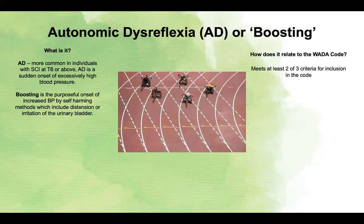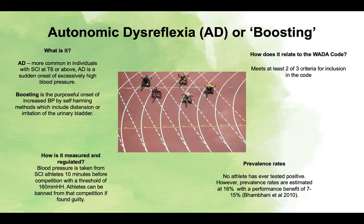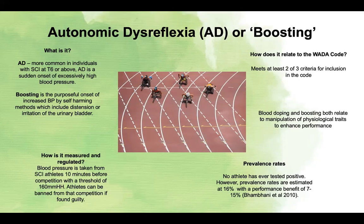The second para-specific cheating method is autonomic dysreflexia, or boosting. AD is common in individuals with spinal cord injuries at T6 or above, and it is the excessive onset of high blood pressure. Boosting is the purposeful onset of increased blood pressure by self-harming methods, which could lead to serious health consequences. It is measured and regulated through blood pressure taken from athletes with spinal cord injuries 10 minutes before competition, with a threshold of 160. Athletes found to be boosting face being banned from that particular competition. When it comes to prevalence rates, no athlete has ever tested positive for such a method.